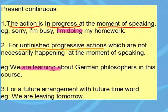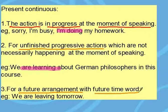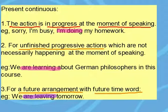Finally, you can use the present continuous for talking about a future arrangement, especially when you use a future time expression with your sentence. Take this example: 'We are leaving tomorrow.' This sentence refers to future time — we are talking about the future.